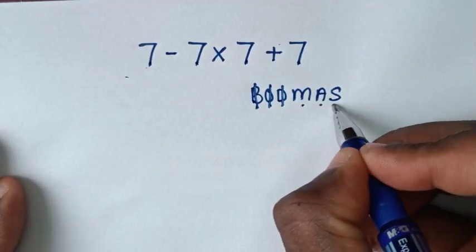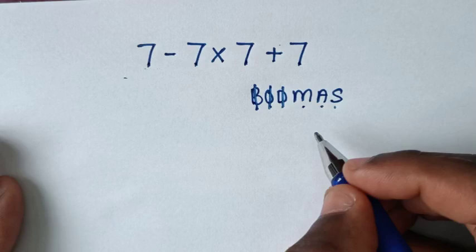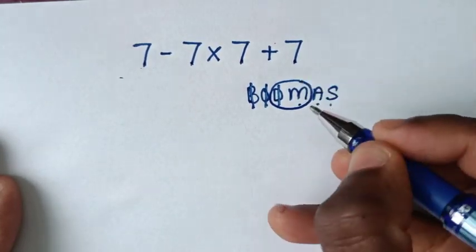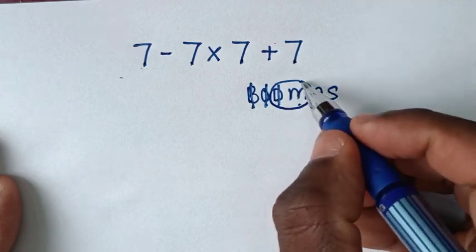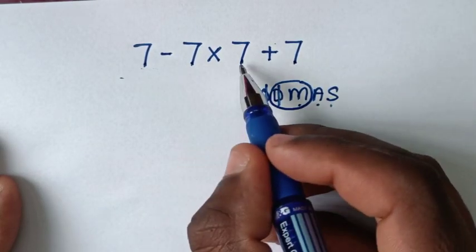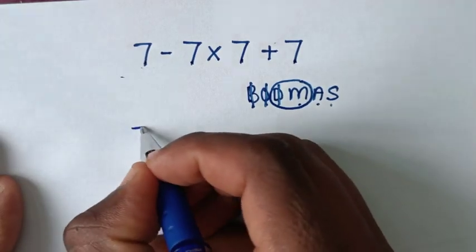Now we'll work first from the division and multiplication group. In this group we don't have division, we have multiplication only: 7 times 7. So it will be equal